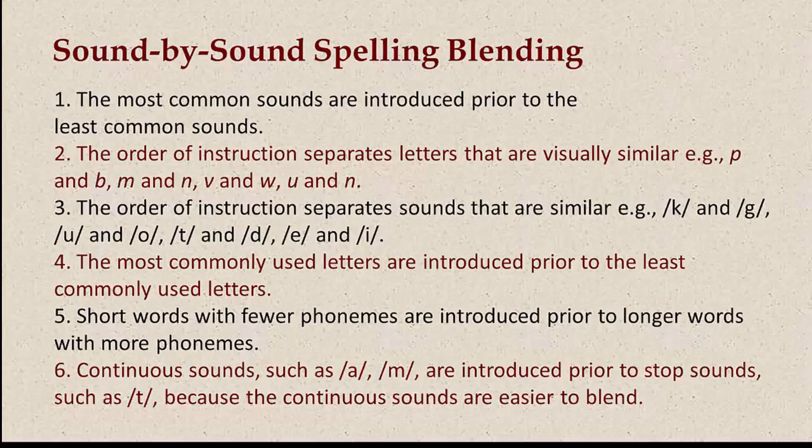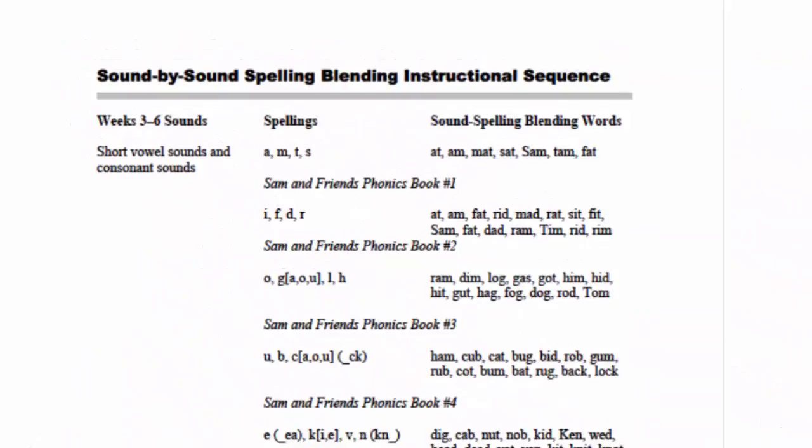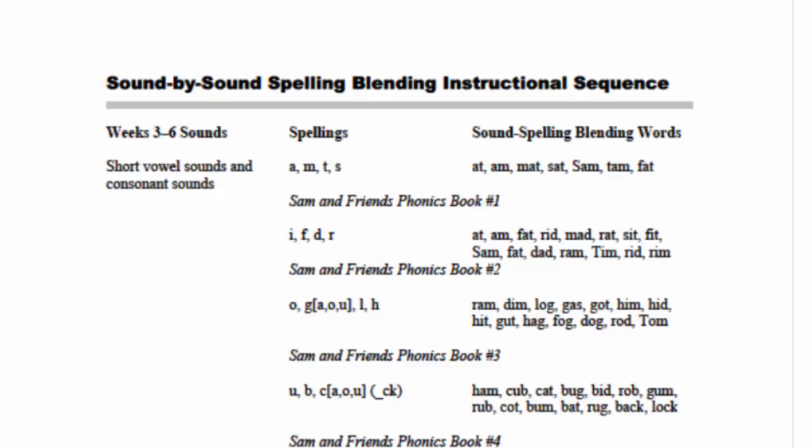The second whole-class instructional activity is sound-by-sound spelling blending. This is introduced in the third week of instruction for both the full-year and half-year intensive programs. In the daily 10-minute sound-by-sound spelling blending activity, students will learn all of the common sound spellings over the first 18 weeks of instruction at a pace of three spelling sets per week. Although some students may already have mastered most of these sound spellings, this reinforcement ensures a solid foundation in the alphabetic code. The sound-by-sound spelling blending sequence of instruction has been carefully designed to reflect years of reading research and teaching experience.